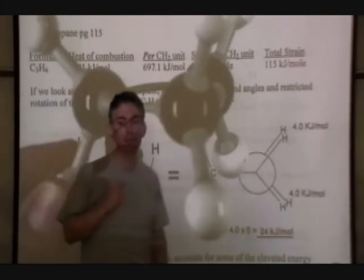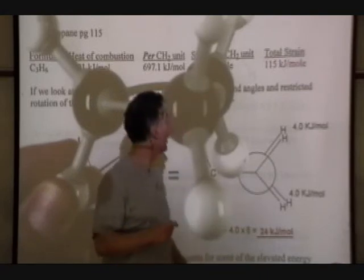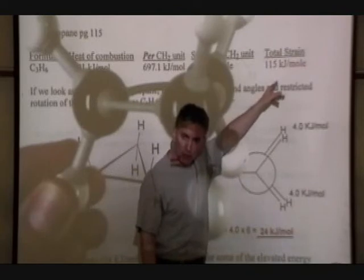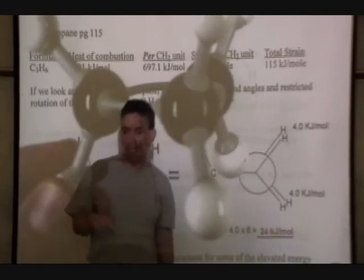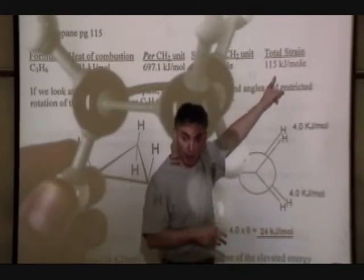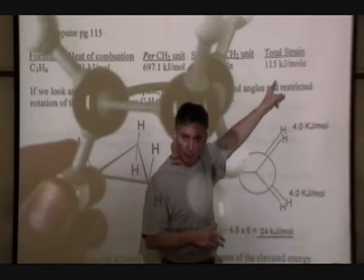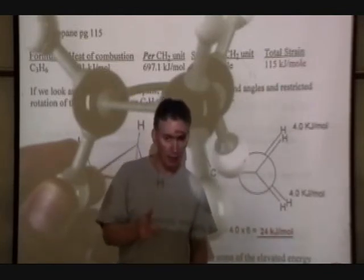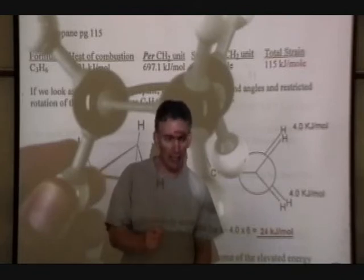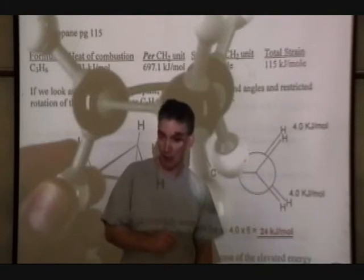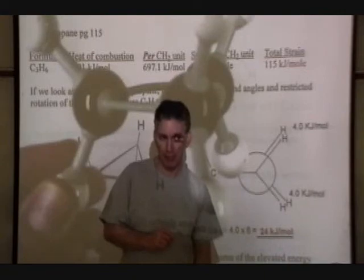So that gives us 8, 16, 24 kilojoules, which can be explained by torsional strain. But that doesn't explain all of the strain energy in the molecule. Torsional strain between bonding pairs of electrons is only explaining 24 kilojoules. And the total strain in this molecule, by comparing heats of combustion, is over 100, 115. So we can say that Bayer's theory is the main source of strain in this molecule. The biggest slice of strain is angle strain. And torsional strain only explains a very small chunk, less than a quarter. So everybody see that?